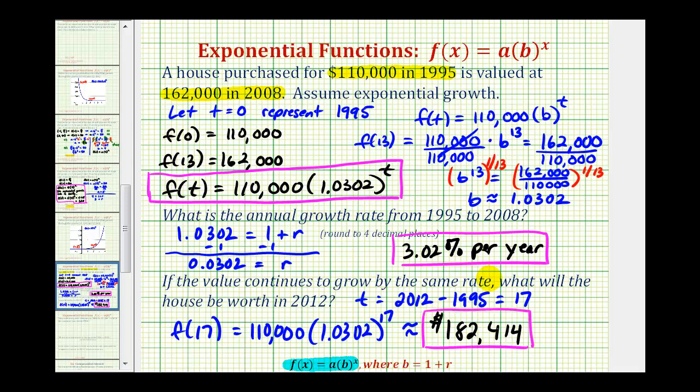But of course, as we all know by now, home prices don't always increase over time. Sometimes they can go down in value, and that's why every model does have its limitations. But based upon the information from this problem, if the trend continues, this would be the approximate value of the house in the year 2012.